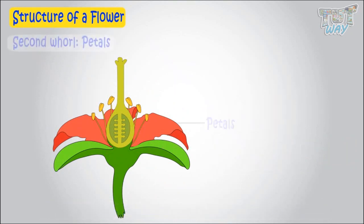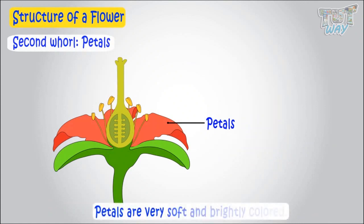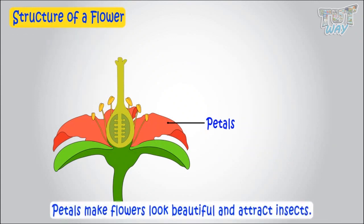second whorl, which is the most colorful part of the flower, shows up. Petals are very soft and brightly colored. Petals make flowers look beautiful and attract insects.